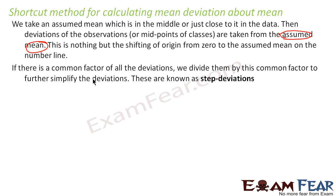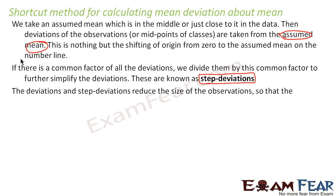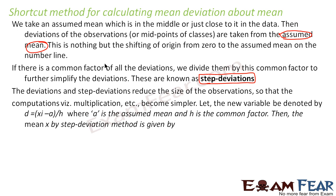Once we have the assumed mean, if we see that there's a common factor for all deviations, we divide them by that common factor to further simplify the deviations. This is called step deviation. It's not mandatory, but if the data is very large — for example, one thousand, two thousand, three thousand — dividing by that value brings the data into the form 1, 2, 3, which is easy to handle. These step deviations are just used to reduce the size of observations.